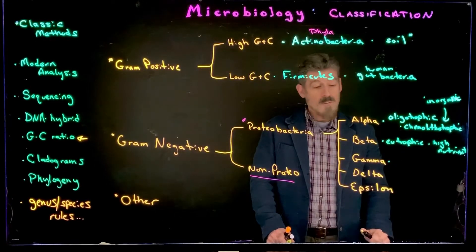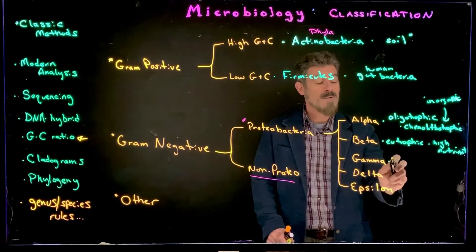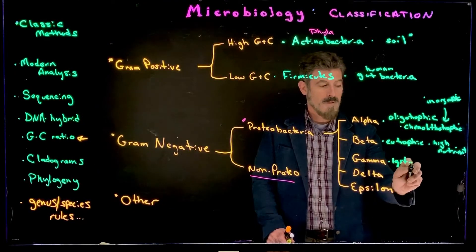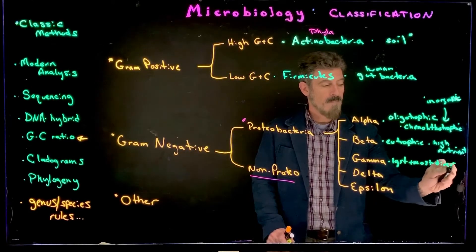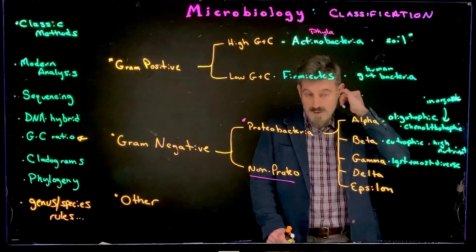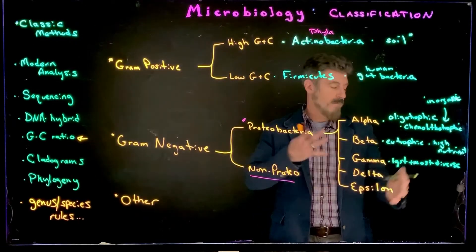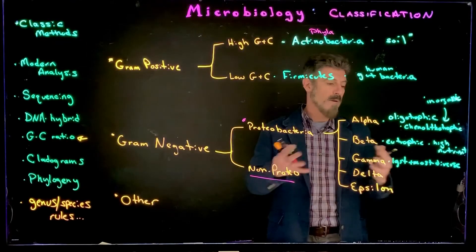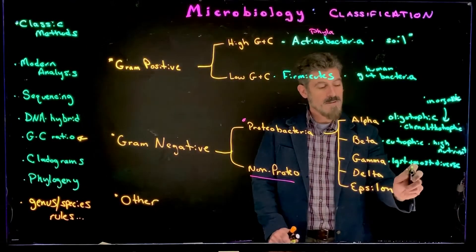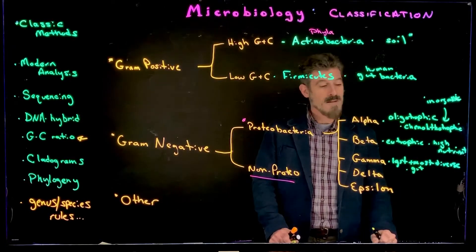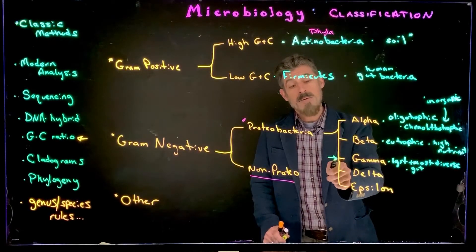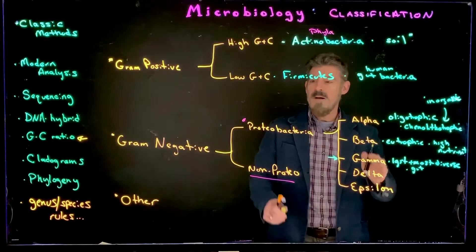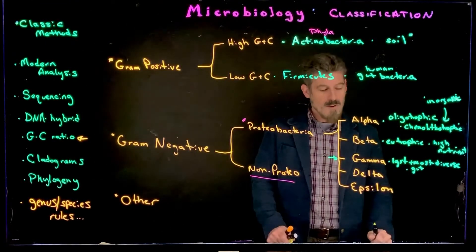The gamma-proteobacteria are probably the largest and most diverse group. They have a huge range — aerobic, anaerobic, all different types of organisms. A lot of these are also gut bacteria. Of all the gram-negative bacteria we end up working with in lab, most all of them are gamma-proteobacteria.